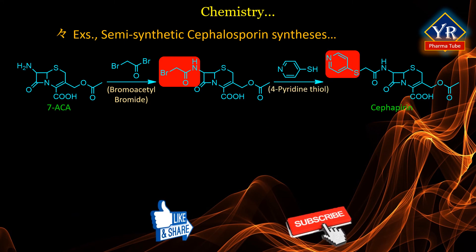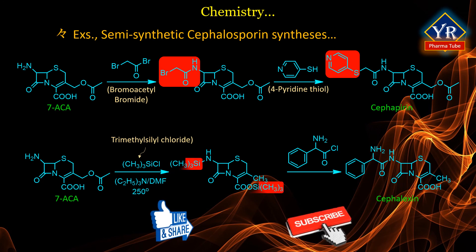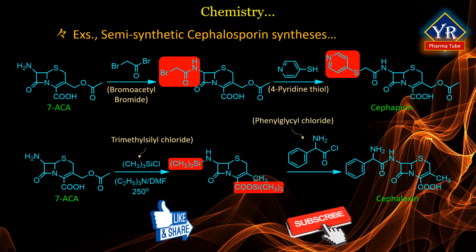Finally, cephalexin can be prepared from 7-ADCA whose amino and carboxylic acid groups are first protected with trimethylsilyl chloride. The secondary amine function is then acylated with phenylglycyl chloride hydrochloride, which affords the desired product after de-blocking with aqueous ammonia.